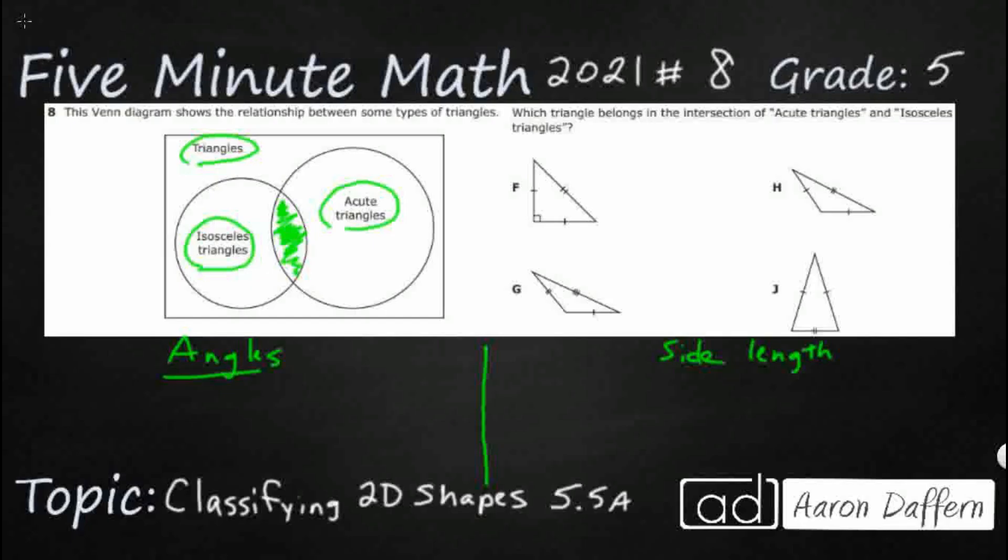There are three ways we are going to be describing angles and three ways we are going to be describing side length. So we have first acute triangles and those are triangles that have an angle measure, all three. So all three angles are less than 90.